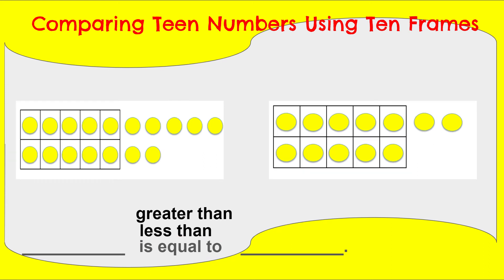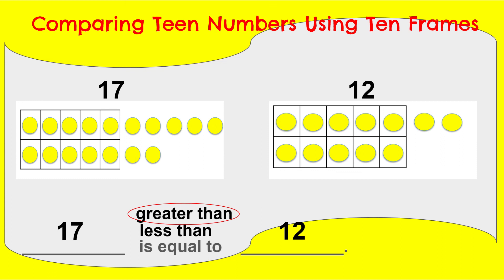Here's another practice for us. Here I see one 10 frame all filled, and I'm going to count on: 11, 12, 13, 14, 15, 16, 17. And over here I have a whole 10 frame filled, and then 11, 12 — 10 and two more to make 12. So I have 17 and 12. Now I have to compare them. Is 17 greater than 12? Is 17 less than 12? Or is 17 equal to 12? 17 is greater than 12. Can you say it using that big voice? 17 is greater than 12.